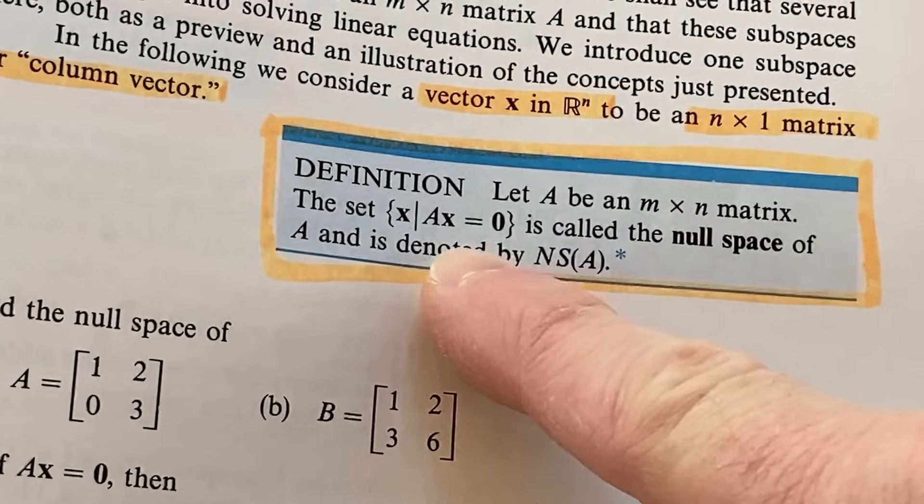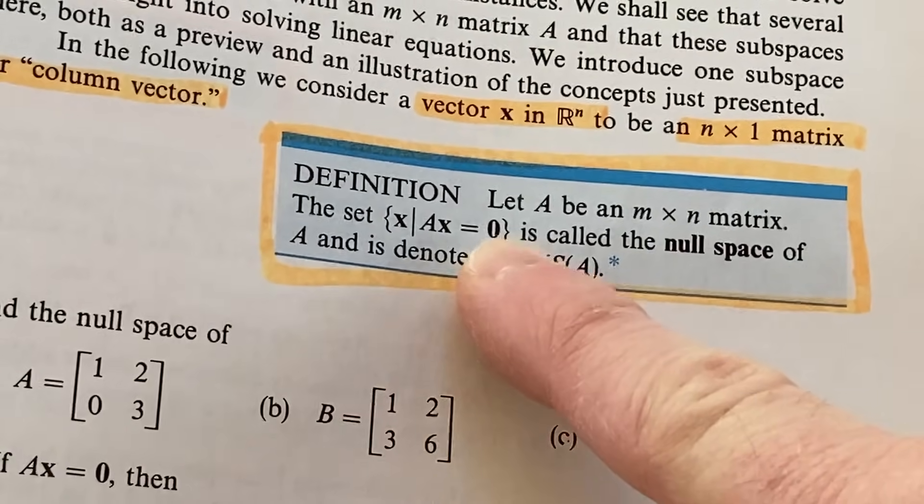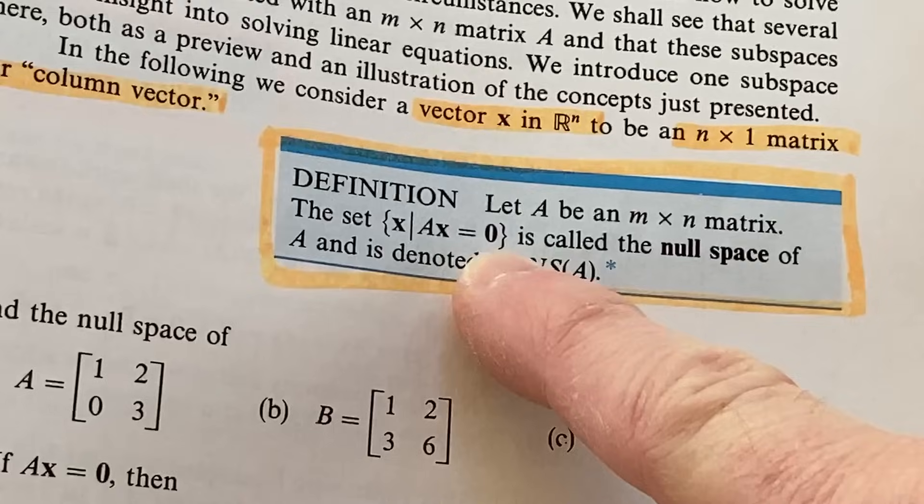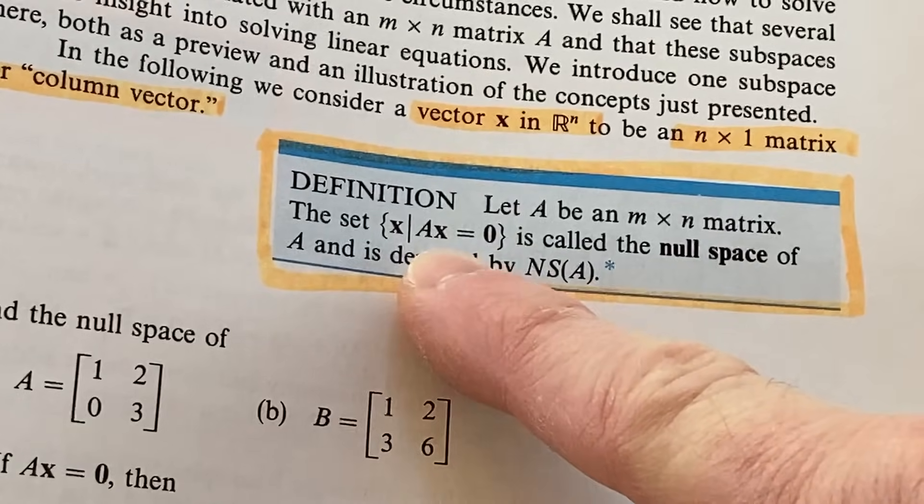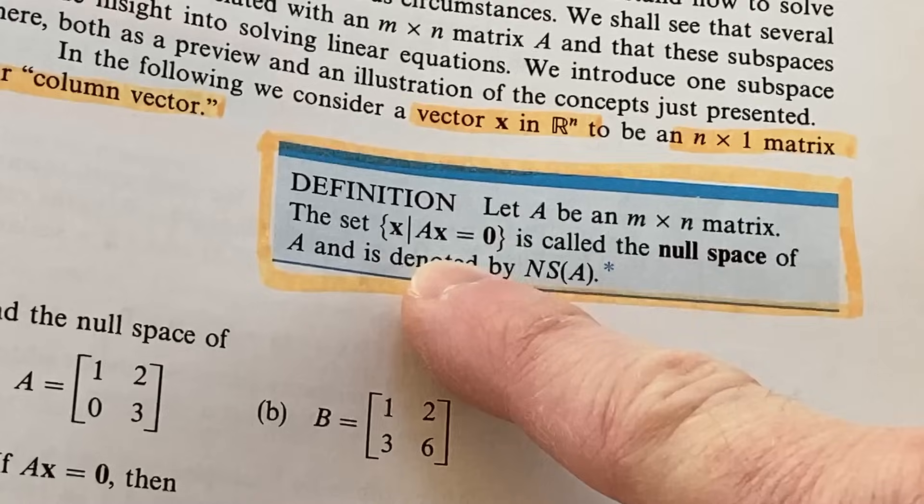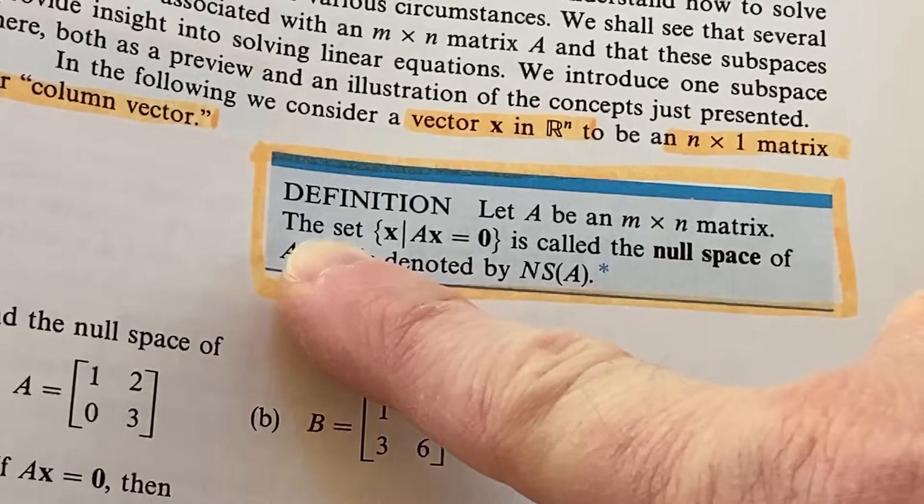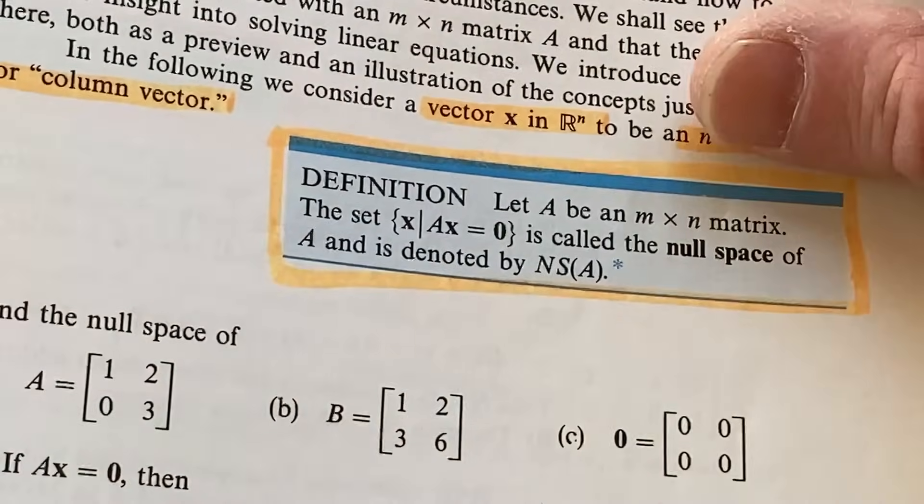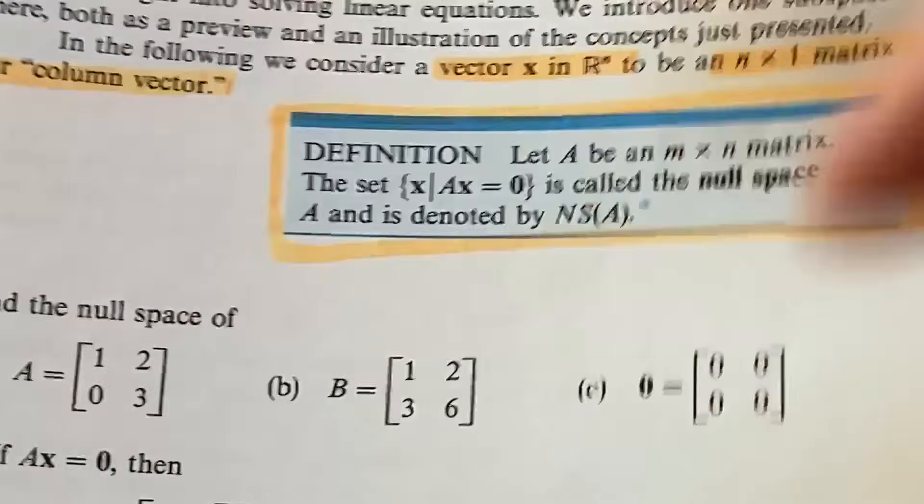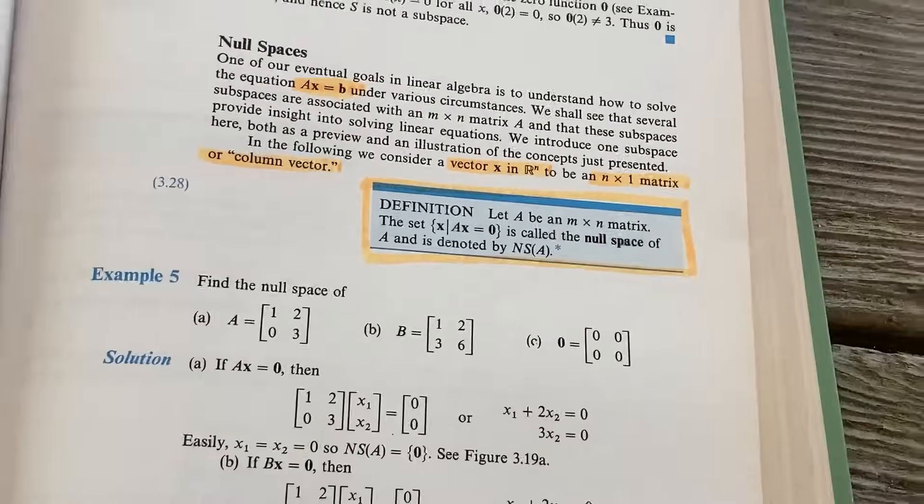So A here is a matrix. Okay. X is a vector. Zero is also a vector. Okay. This is the zero vector because you're taking a matrix and you're multiplying it by a vector. So you're going to get a vector, right? So, and yeah, pretty cool. It's called the null space.